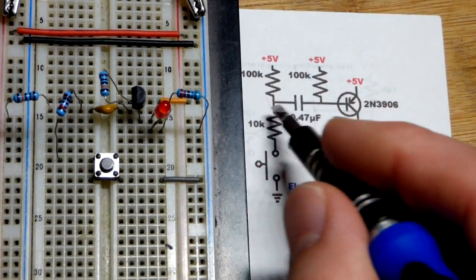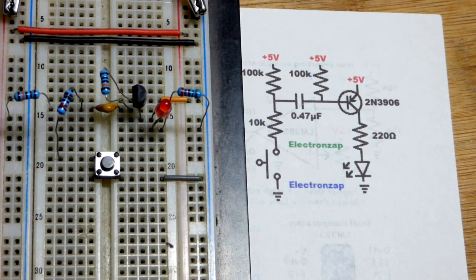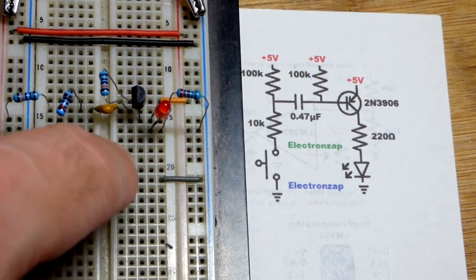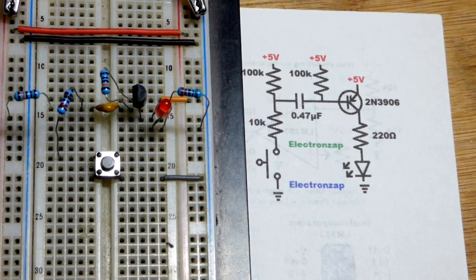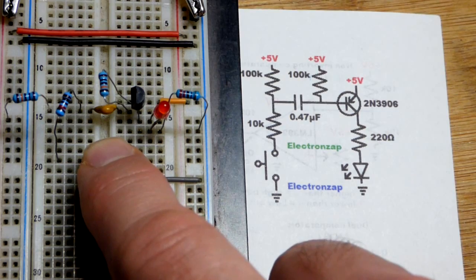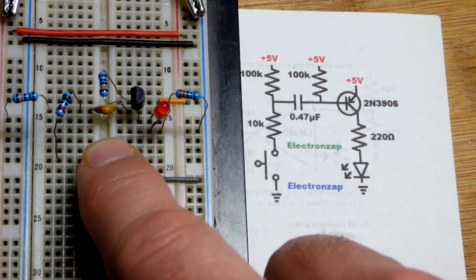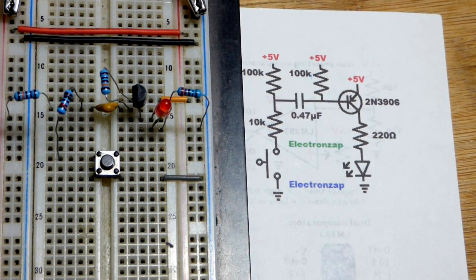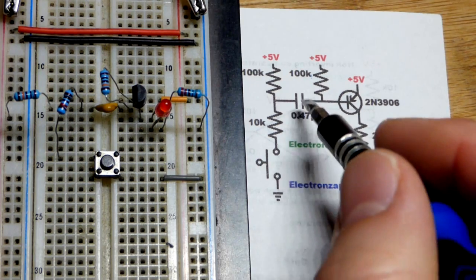Now we release it and the capacitor discharges, so that's why it blocks direct current. I kept doing switch bounce with that hand. There you go, it passes current when you press the button but then it stops. And then when you release it, that was switch bounce, then current goes the other way.